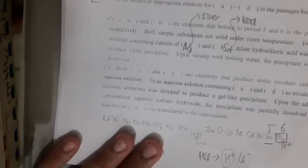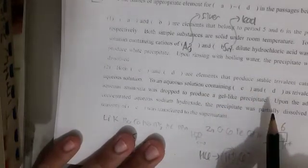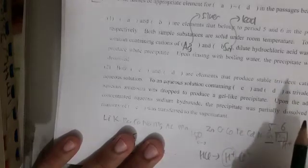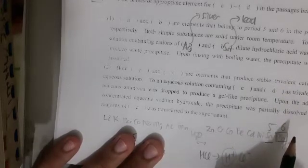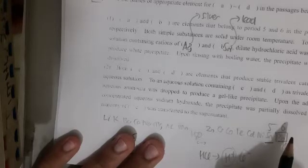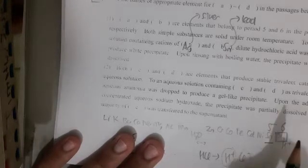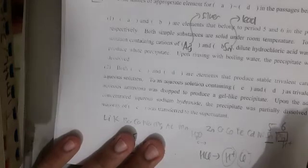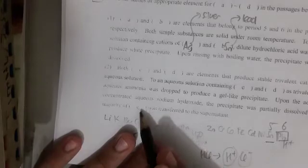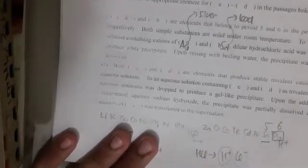Number two. This is a very different element now. Both C and D are elements that produce stable trivalent cations in an aqueous solution. In an aqueous solution containing this as trivalent cations, the aqueous ammonia was dropped to produce a gel-like precipitate. Upon the addition of concentrated sodium hydroxide, precipitate was partially dissolved and the majority of C was transferred to the supernatant.